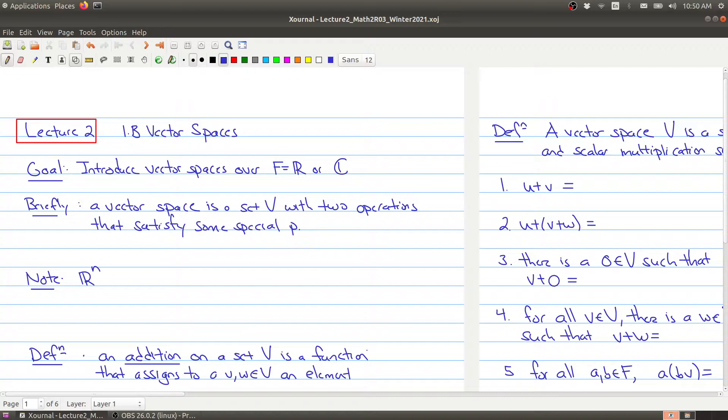We'll come to that list of special properties in a couple minutes. Vector spaces are basically one of the main objects of study in this course. Now R^n, the set of n-tuples with entries in R, is something you would have looked at in Math 1B03, and this is a standard example of a vector space. When you're thinking about a vector space and you want an example, think of R^n.